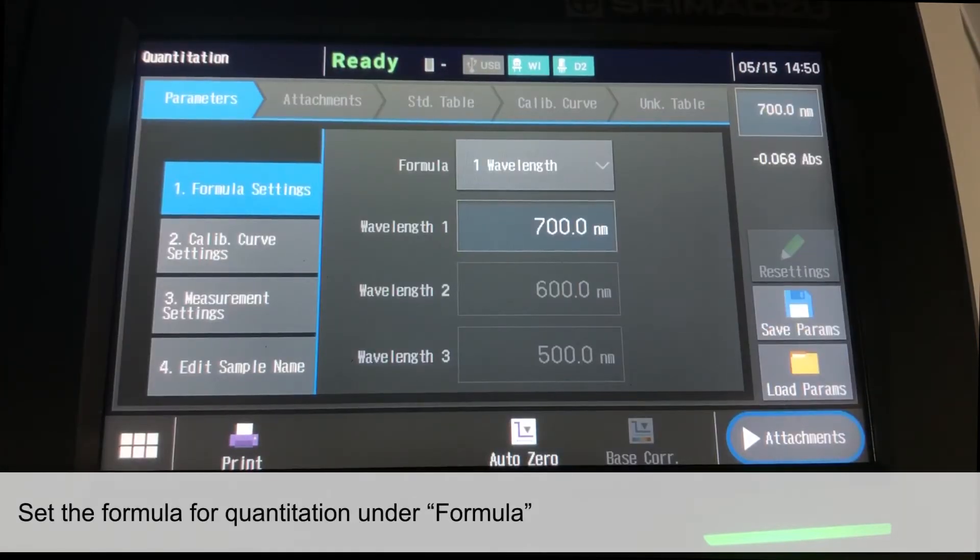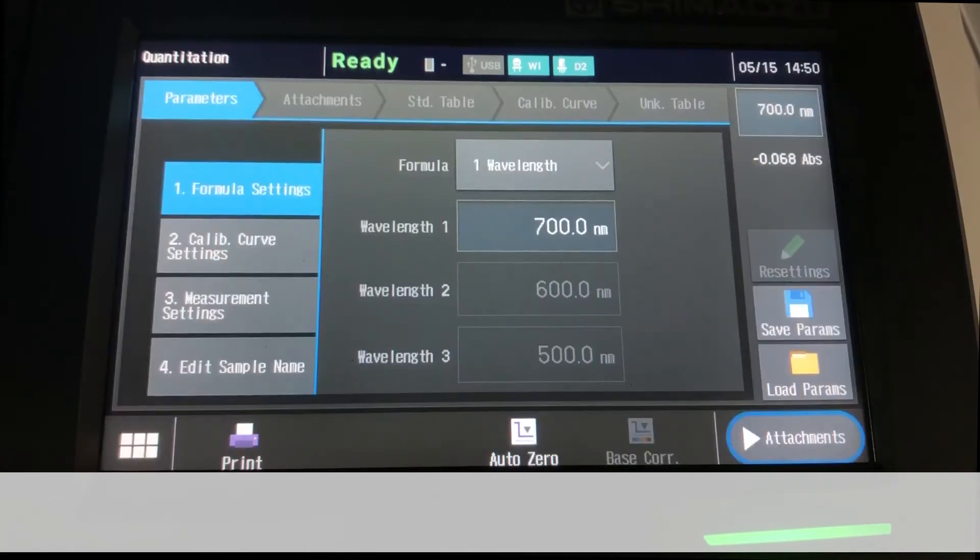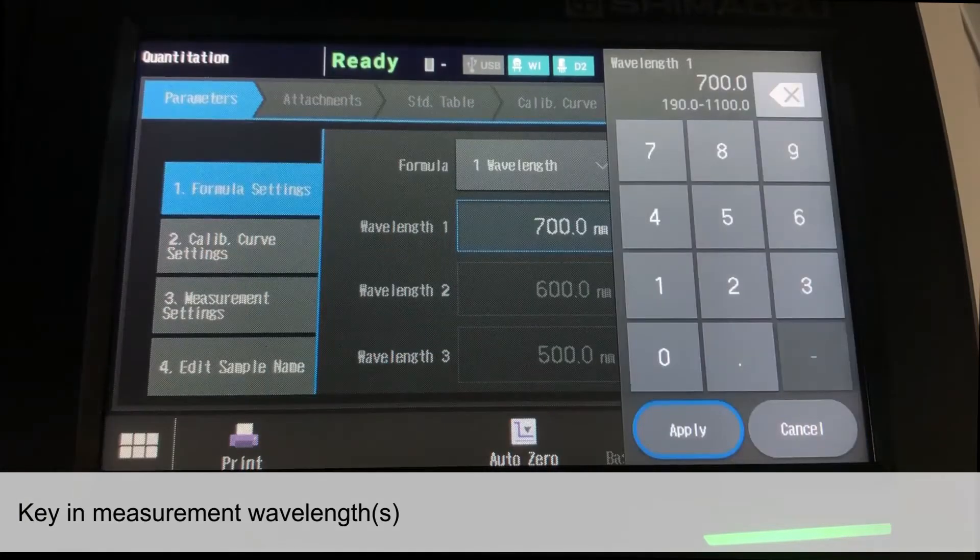Under Formula, set the formula for quantitation. For this example, one wavelength is selected. We will key in the wavelength used for quantitation and select Apply.